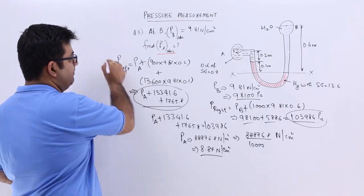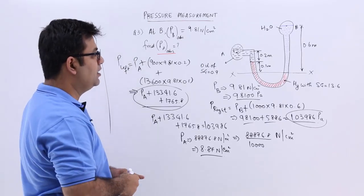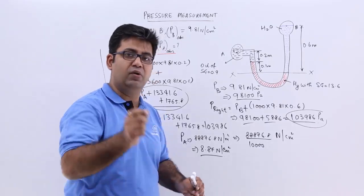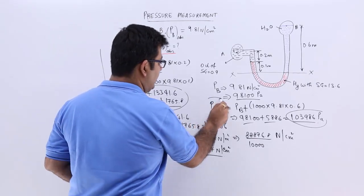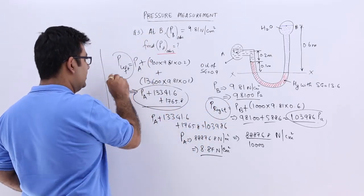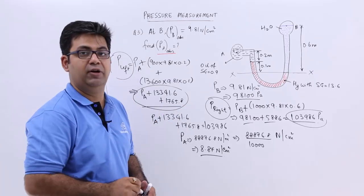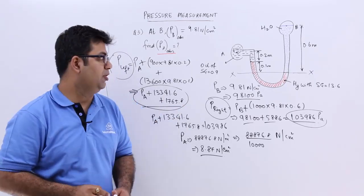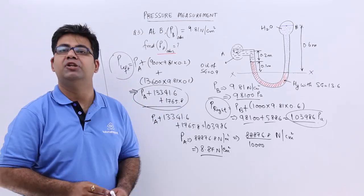That is the absolute pressure at point A. Again a very simple question. Always remember look at the dimensions given to you, recognize the liquids and then simply find out the pressure in the right limb and the pressure in the left limb and equate them to find out the given value. So I hope you understood this. Now let's move on to question number 4.